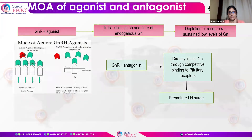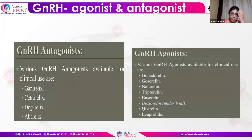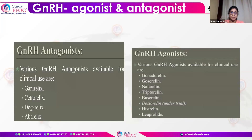Antagonists available include GnRLX, CetRLX, DegarLX, and AperLX — but the commonly used ones are GnRLX and CetRLX. GnRH agonists include Leuprolide, Goserelin, Tryptorelin, and Buserelin. When given on a long-term basis, they cause suppression. These are the agonists and antagonists available in the market, used for prevention of the LH surge.